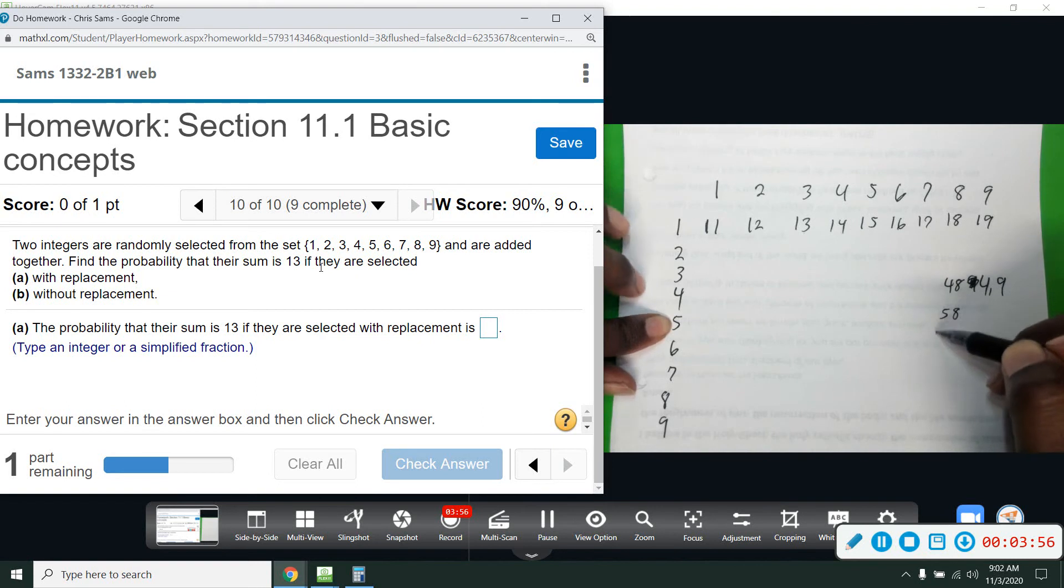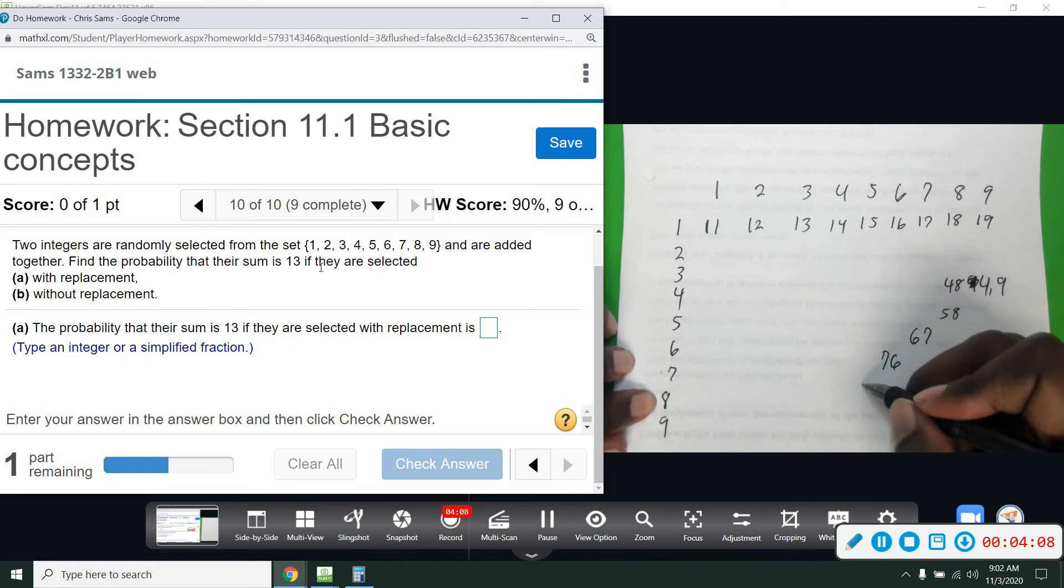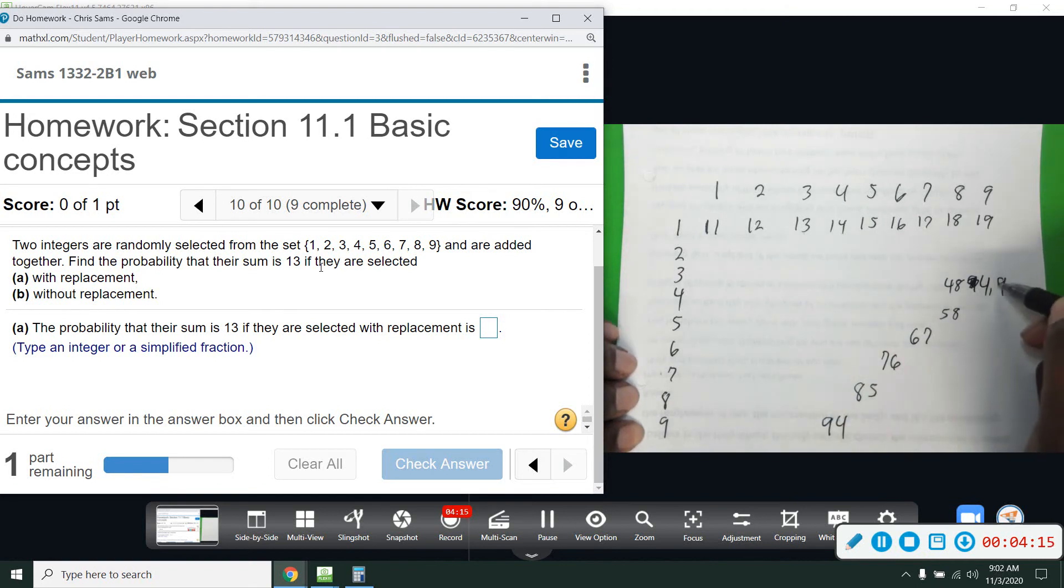And then we're going to go diagonal. So four and nine, 13, five and eight. The next row come one down and one over. That would give us six and seven. And then one down, one over. That would give us seven and six. One down, one over. That would give us eight and five. And then one down, one over. That would give us nine, four. So these four, one, two, three, four, five, six terms will give us a sum of 13.